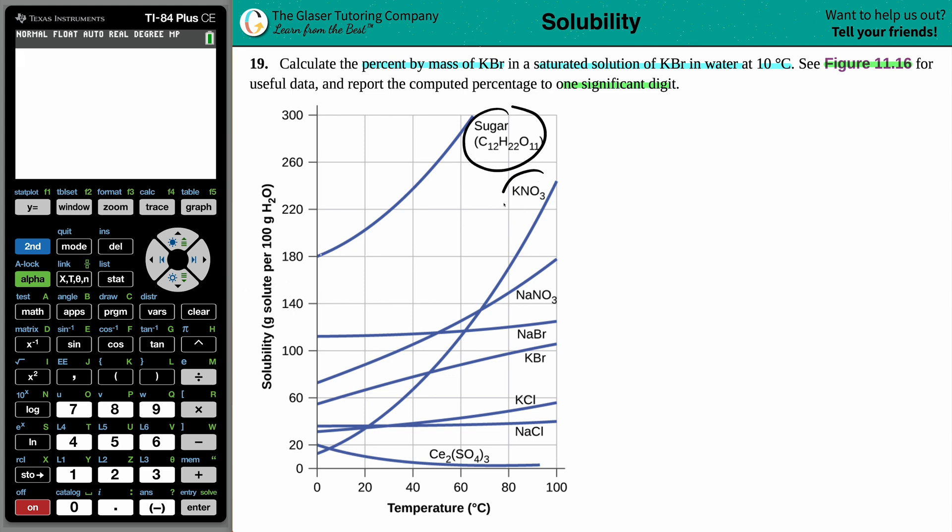so your solid, either you're talking about sugar, KNO3, NaNO3, right? NaBr, KBr, KCl, NaCl, or Ce2(SO4)3.